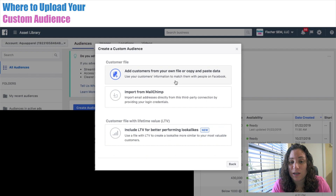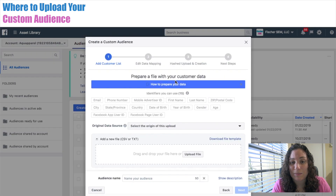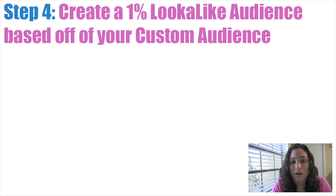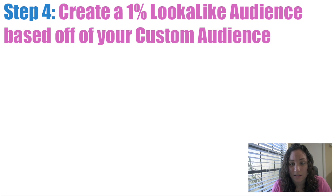For the time frame, you want to make sure that you're not using the same email addresses twice, so this will also save you some time and money. Step four: create a 1% lookalike audience based off of the list that you just uploaded — your custom audience that you just created.